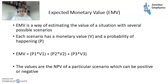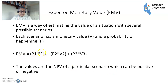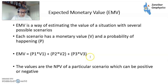EMV is a way of estimating the value of a situation with several possible scenarios. You're looking forward, and each scenario has a monetary value and a probability of happening. So the EMV is basically the sum of all of these values multiplied by their respective probabilities. EMV equals P1 multiplied by V1, plus P2 multiplied by V2, plus P3 multiplied by V3 in a three-scenario situation.